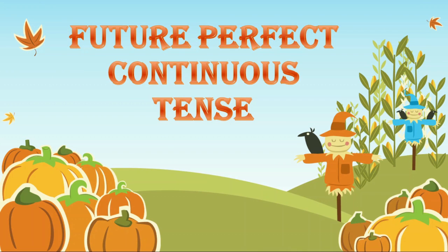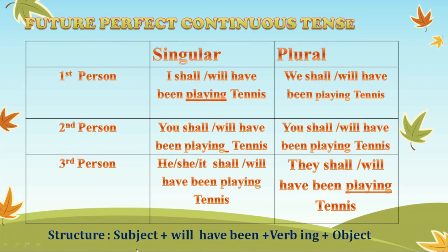Now let's take future perfect continuous tense. We use it to show that something will continue up until a particular event or time in the future. Duration expressions like 'for five minutes,' 'for two weeks,' and 'since Friday' are used with this tense. The structure is: subject plus will have been plus verb-ing plus object. For example, 'We will have been playing tennis.'